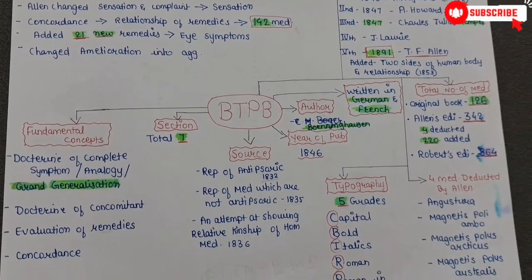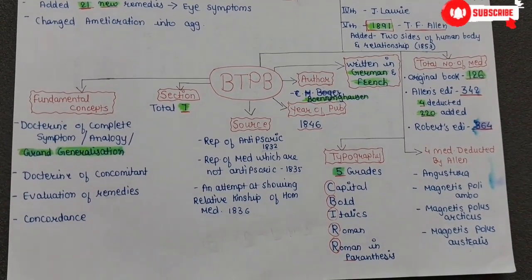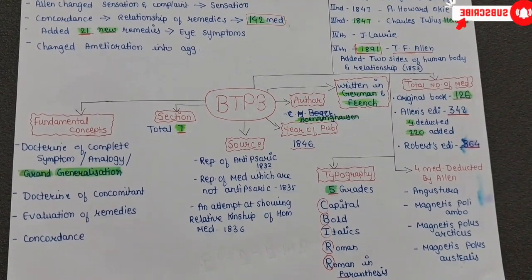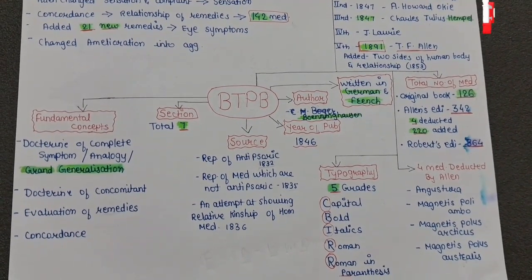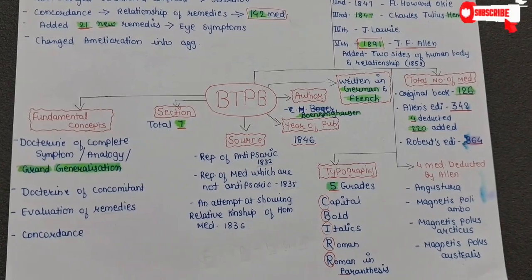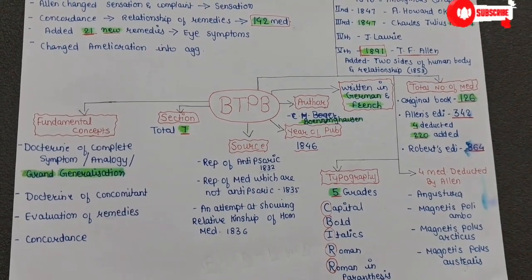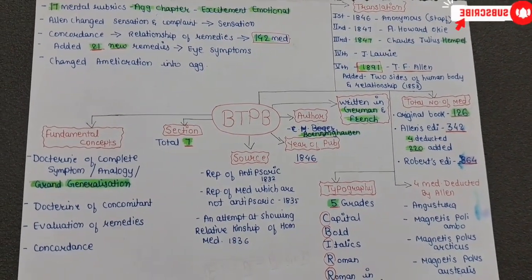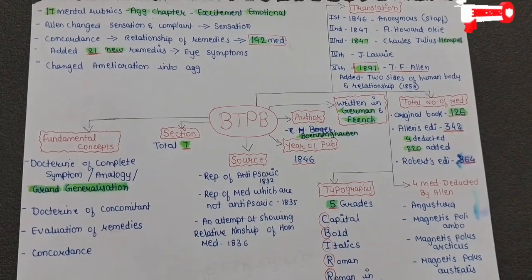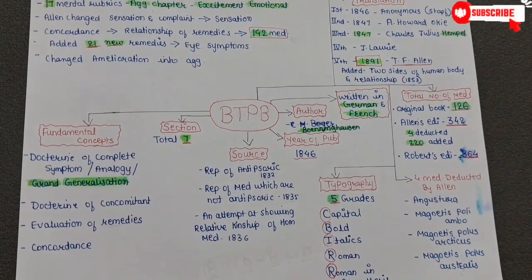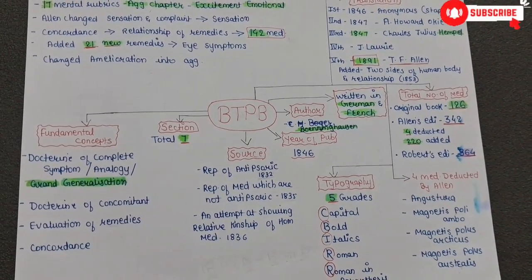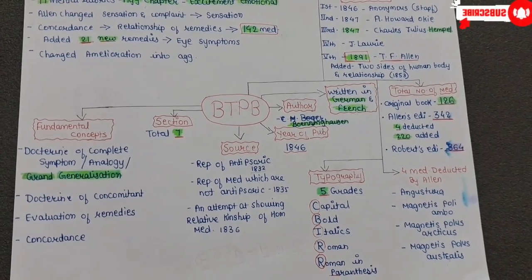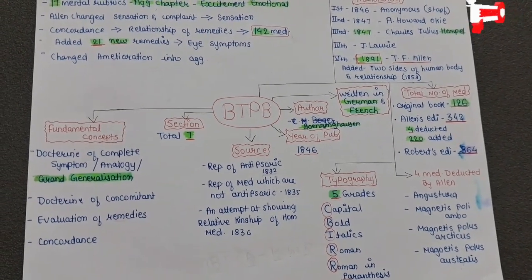So that is the mind map of BTPB at a glance. You should remember: the author, sources, typography, seven sections, number of medicines in different editions, and different translations. Let's also look at what all seven sections are there.